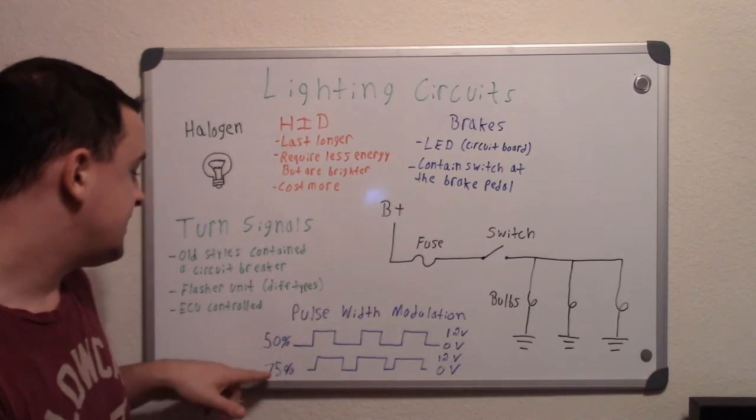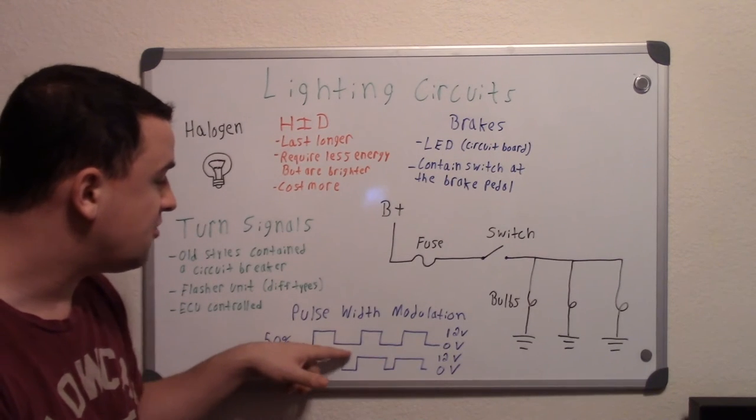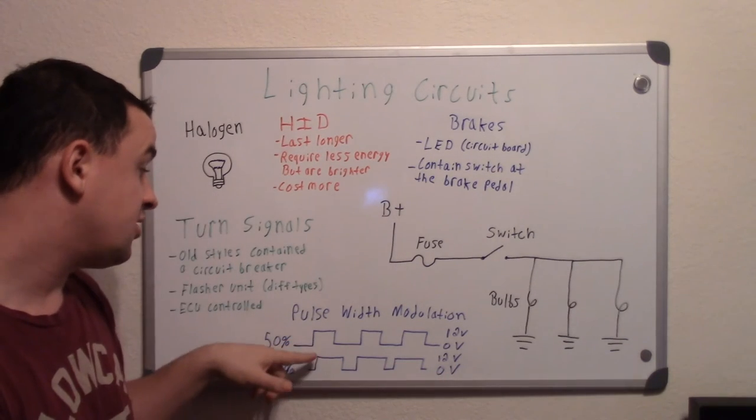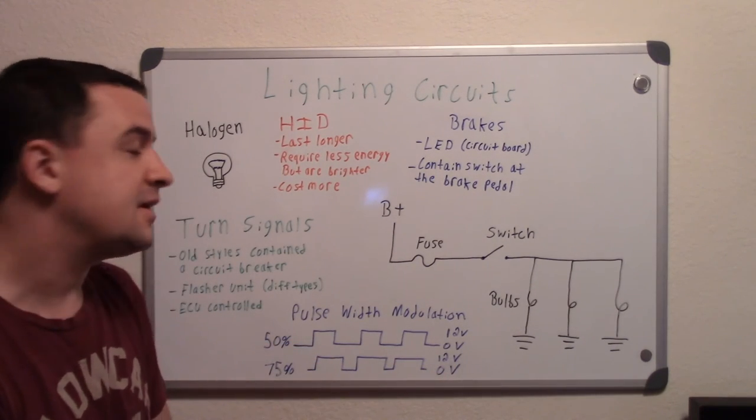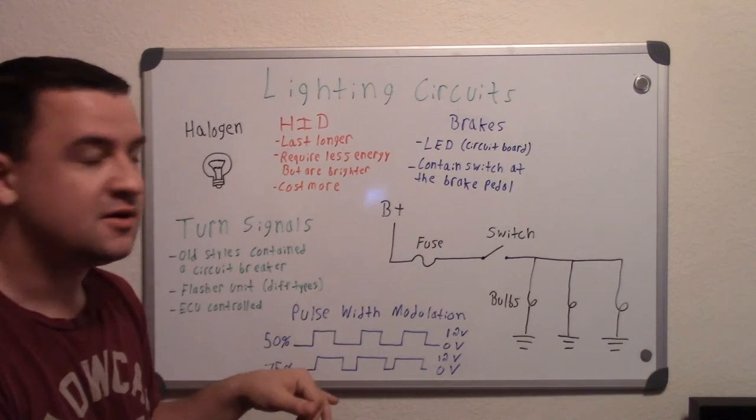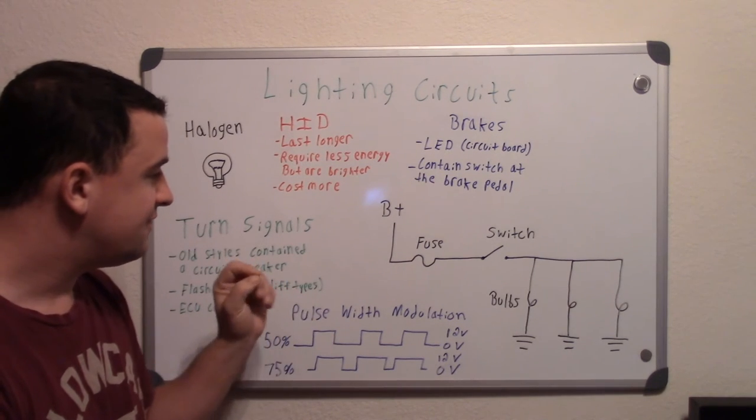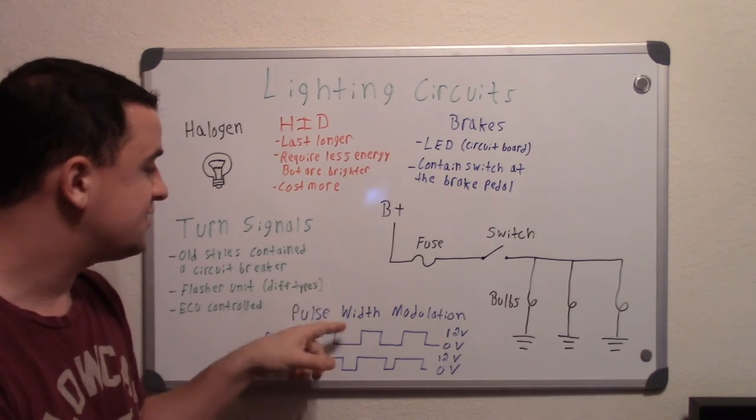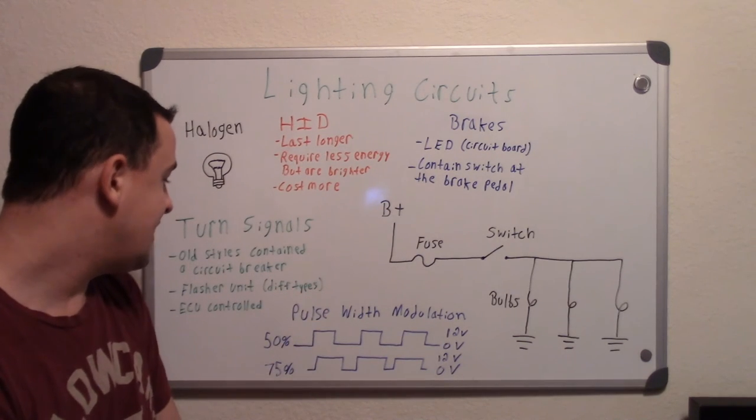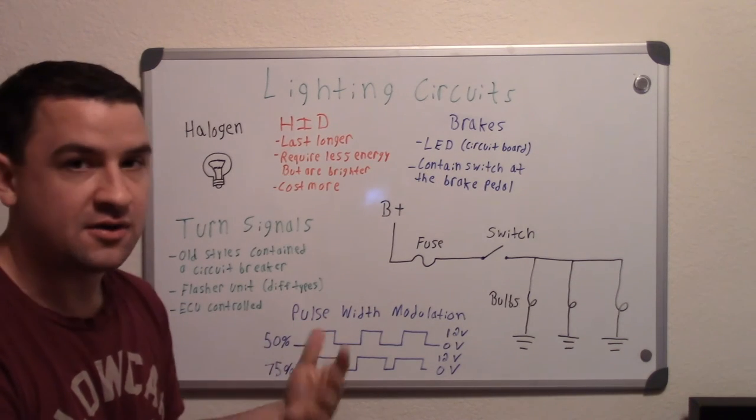Whereas down here, this is 75%, so as you see now the on time or the 12 volts is much longer than the off time or the 0 volts. So essentially the longer it's on, the brighter it's going to be. And that's what pulse width modulation is. It's all controlled by the computer and this is all happening very fast. So essentially at the little tiny millisecond, these switches are turning on and off very, very fast. And the longer that on time is versus the off time can create a brighter light.